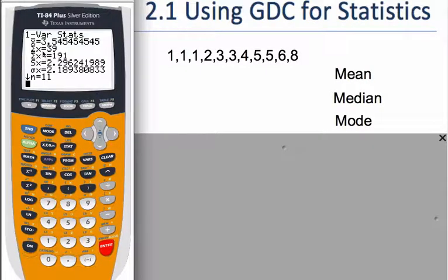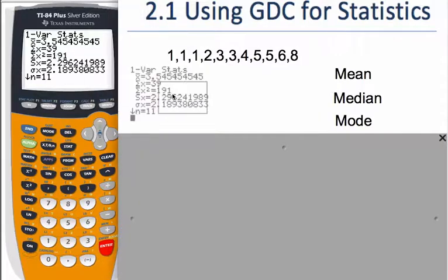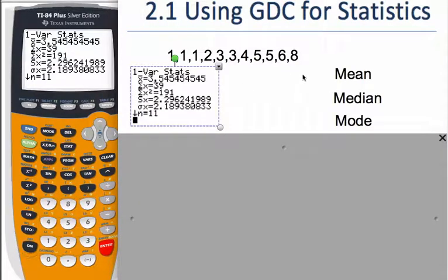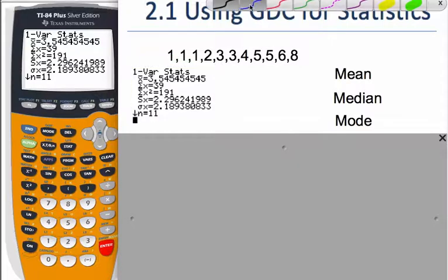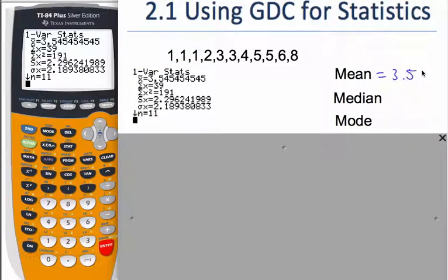So what does the x bar mean? X bar means the mean or the average. All right, so let's just go ahead and write that out then. So our mean is three point five five, that's to three sig figs, significant figures.